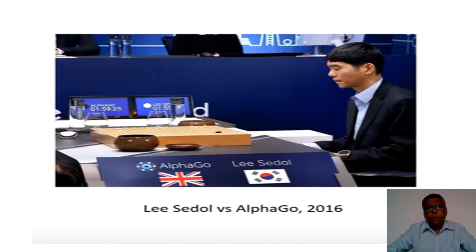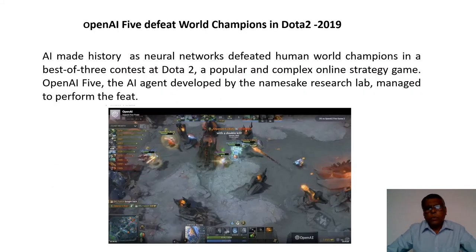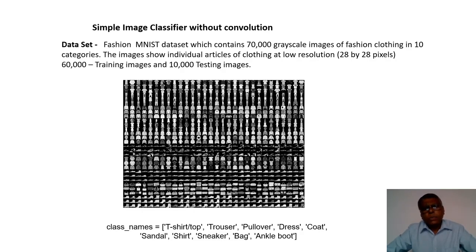Machines have been doing better than humans in various domains for some time. In 1997, IBM's Deep Blue defeated Garry Kasparov, the world chess champion. In 2013, Google's AlphaGo defeated the world Go champion — Go being a board game. Last year in April, OpenAI Five defeated the world champions at Dota 2, a very popular and complicated video game. So computers are doing better than humans in computer vision applications and image classification as well.